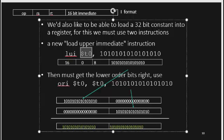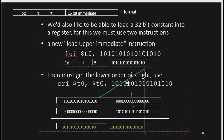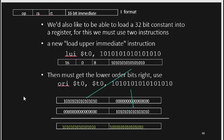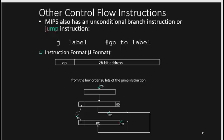ORI adds the lower 16-bits to $t0, which already contains the upper 16-bits from LUI, and stores the result back in $t0, completing the 32-bit constant.